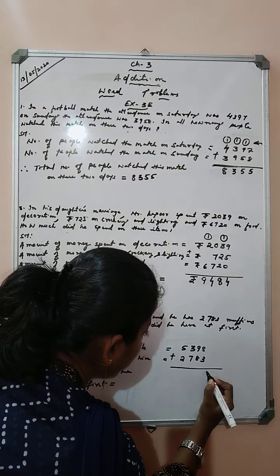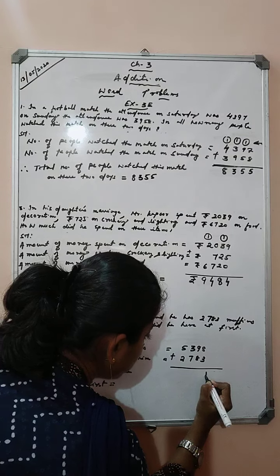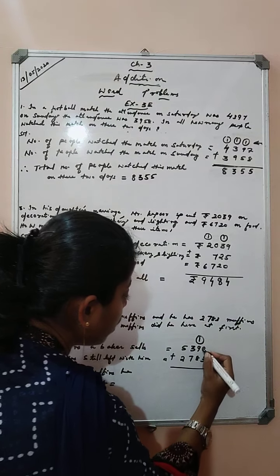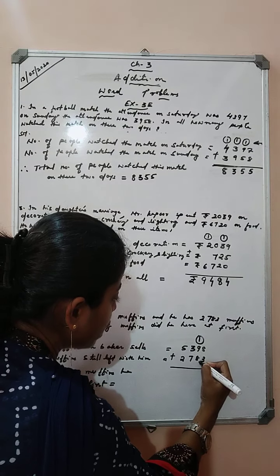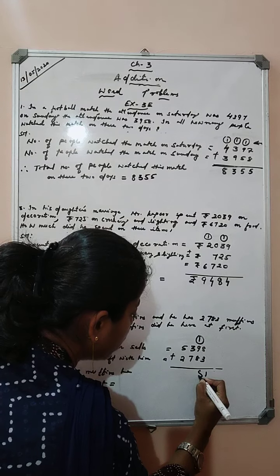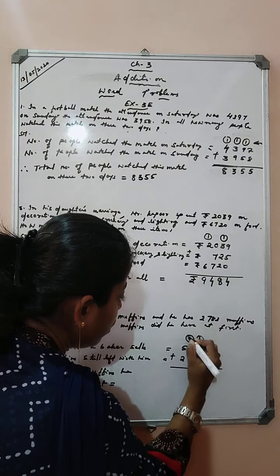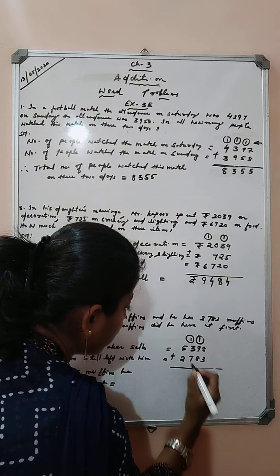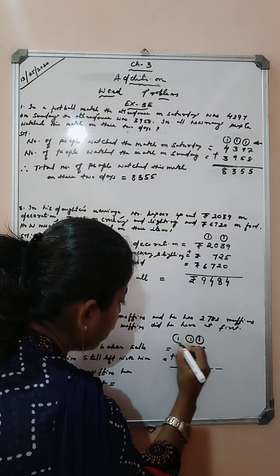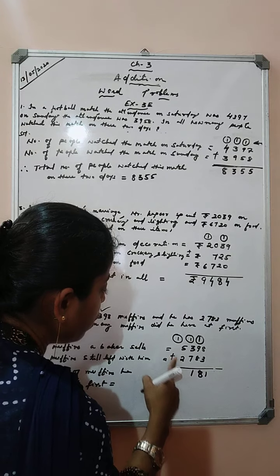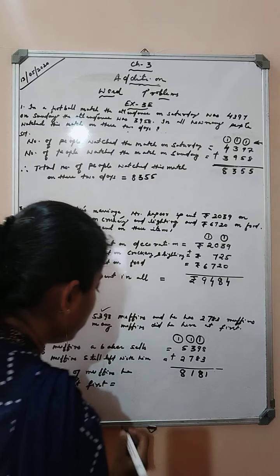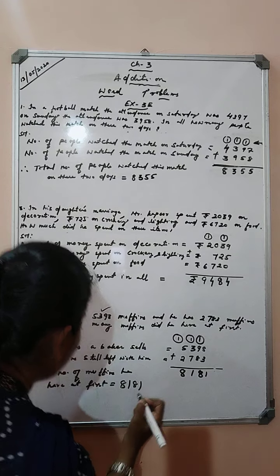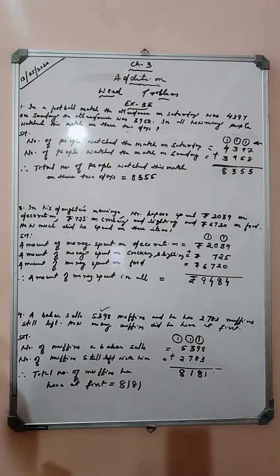Let us add: 8 plus 3 is 11 — carry 1. 9 plus 8 is 17, plus 1 is 18 — carry 1. 3 plus 7 is 10, plus 1 is 11. So, total number of muffins he had at first was 8,181.